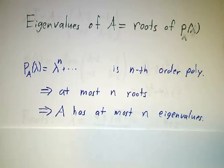That means that an n by n matrix can have at most n eigenvalues. So if I give you a 2 by 2 matrix, and you found two eigenvalues, you're done. It can't possibly have any more than that.